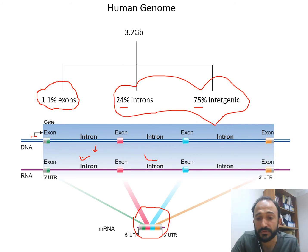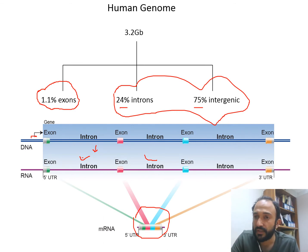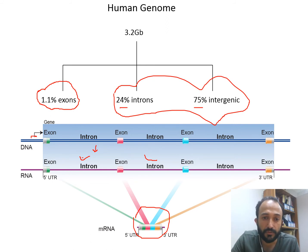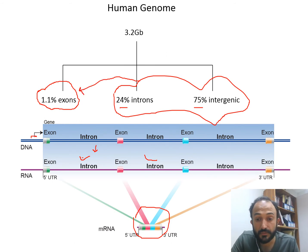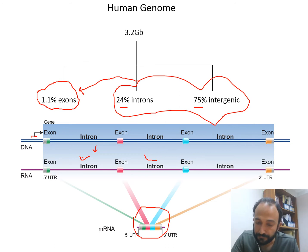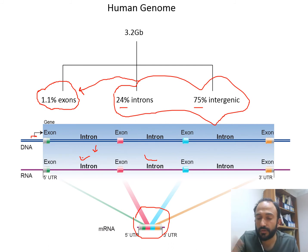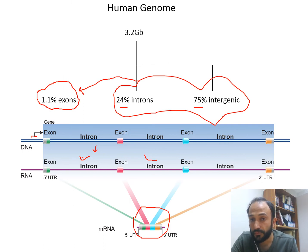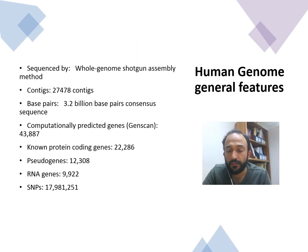At that time, the intronic and intergenic regions were called 'junk DNA' — meaning unimportant — since only 1% of the genome seemed to matter. Now we know that there are a lot of promoter sites, silencers, insulators, enhancers, and other regulatory regions that actually regulate the expression and function of genes. This whole story is very interesting, and there are a lot of new biological questions that arose from sequencing the whole genome.